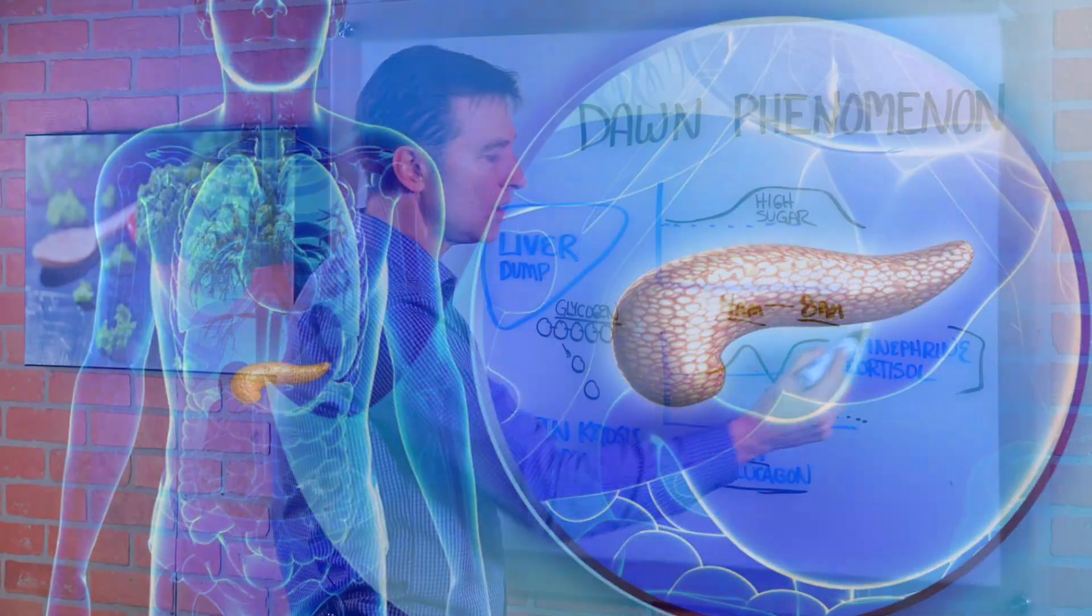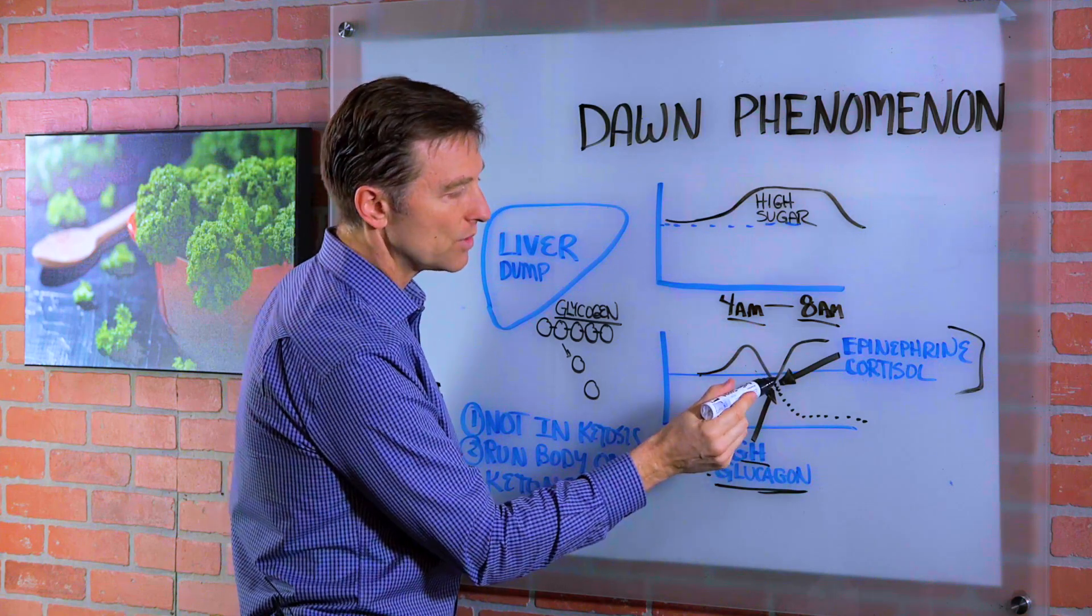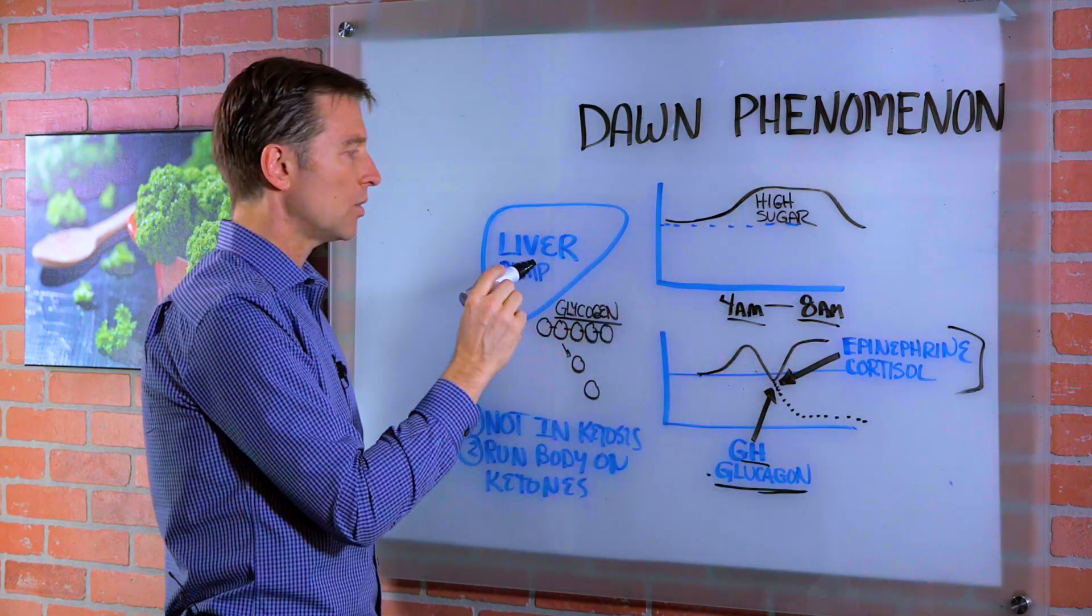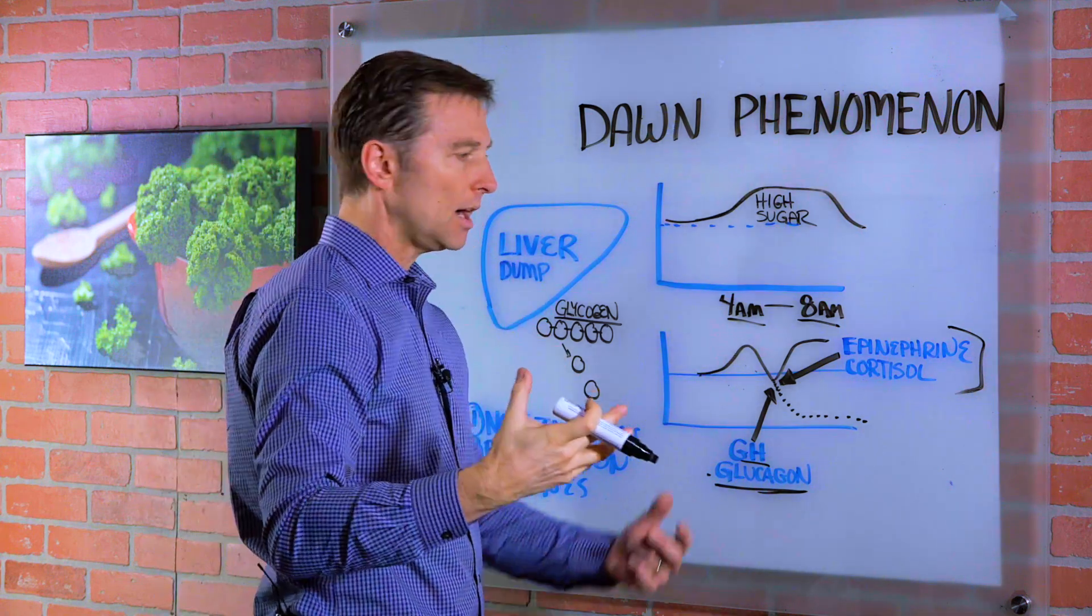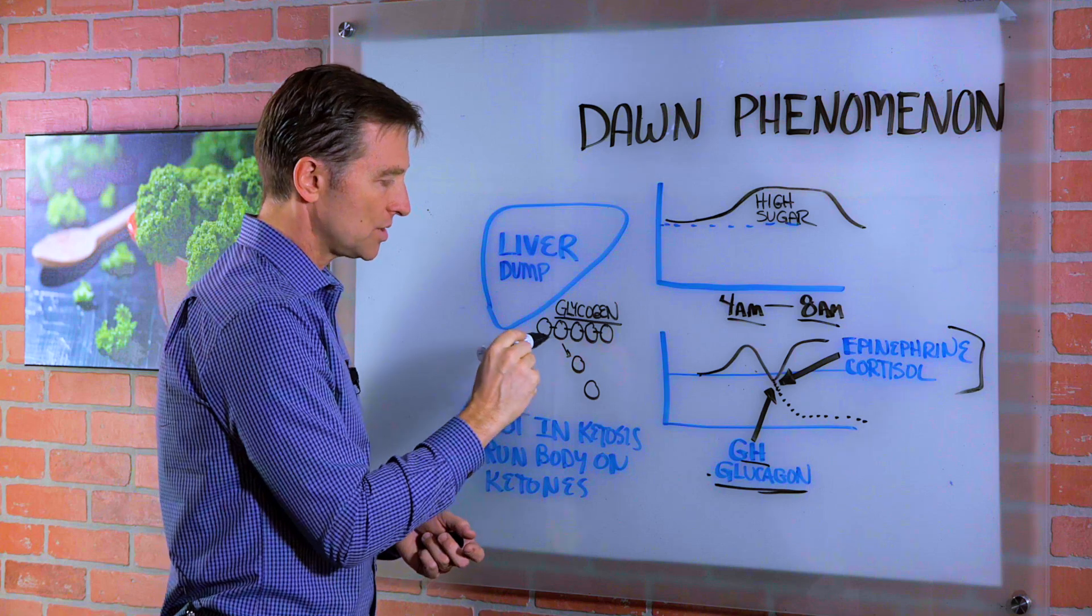So all of these hormones actually cause a rebound effect and release sugar or stored sugar from the liver. So they create a liver dump of the release of glycogen, which is stored sugar.